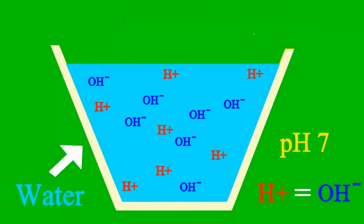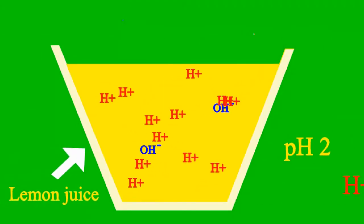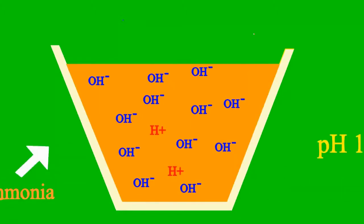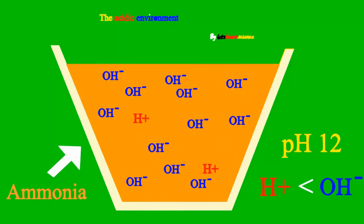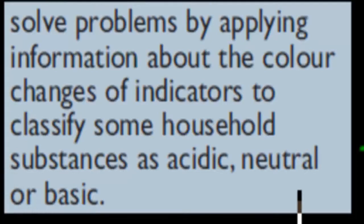Neither acid nor base, but less than 7 it's an acid we say, more than 7 is a base all the way. Welcome back. In the last video we talked about an experiment you've done in class when it comes to looking at color changes of different indicators. What we're going to do in this video is cover the next dot point, which says solve problems by applying information about the color changes of indicators to classify some household substances as acidic, neutral, or basic.